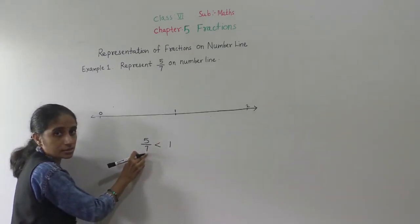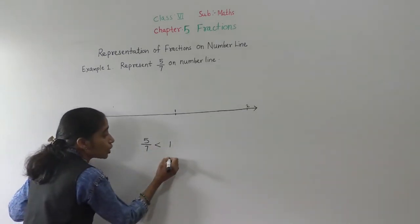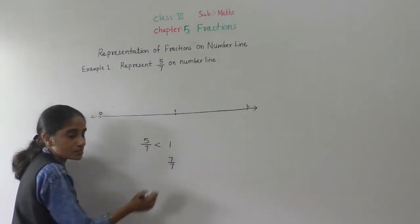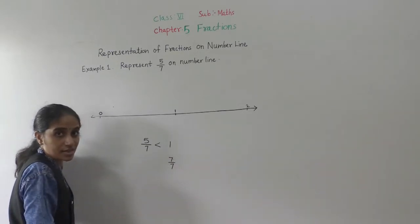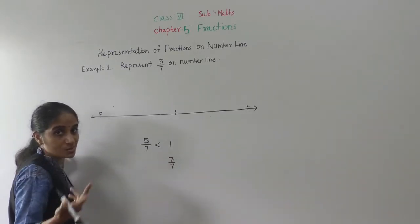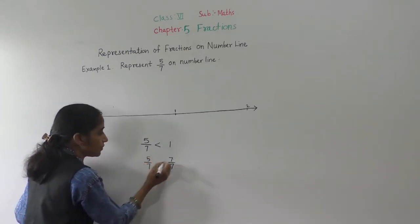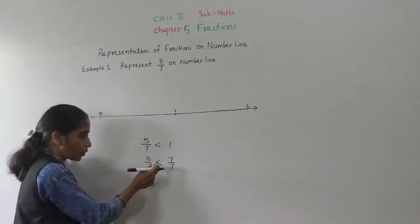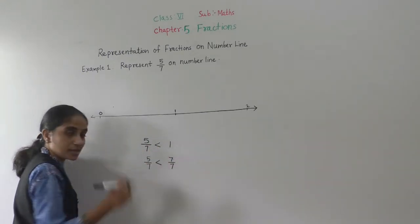See here, how many parts are there? 7. Total parts are 7, and in that these are 5 parts. So 1 is greater. 7 upon 7 means 1 — whole means 1. So 5 upon 7 is smaller than 7 upon 7, meaning 5 upon 7 is smaller than 1.